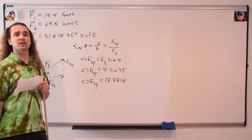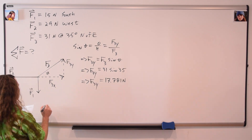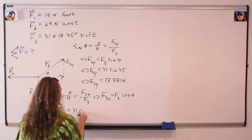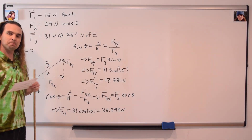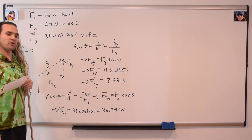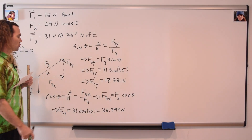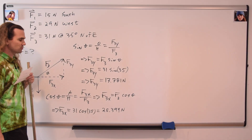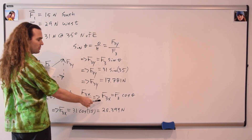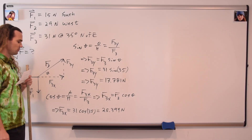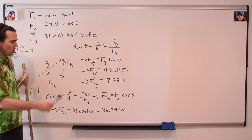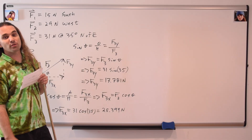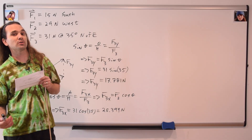We can do the same thing with the cosine of theta. The cosine of theta equals adjacent over hypotenuse, or force three in the x direction divided by force three. Multiplying through by force three gives us force three in the x direction equals force three times the cosine of theta, or 31 times the cosine of 35 degrees, which is 25.394 newtons.